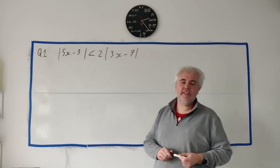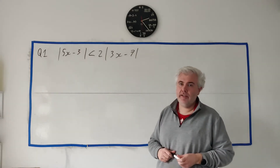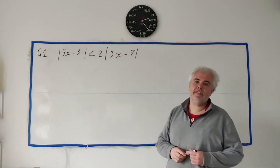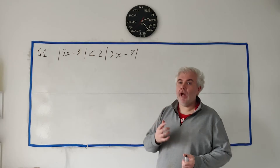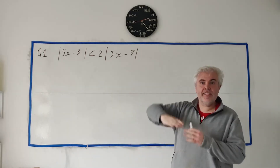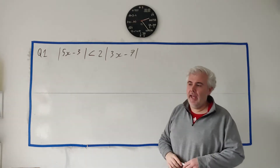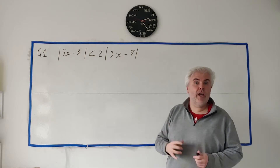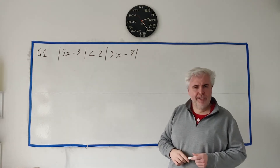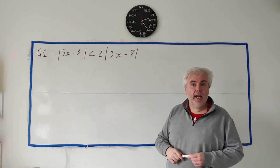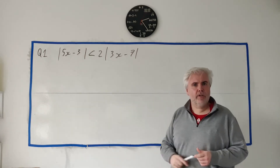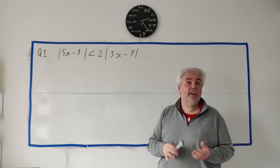In question one we need to solve the inequality with absolute values on both sides, and there are two main ways to solve this. One would be graphically — drawing out the two equations on each side and seeing which is bigger. The other method would be algebraically, squaring both sides and solving that way. Most students are happier doing it algebraically and I will do that later in the video, but first let me do it the graphical way because I think you can learn a lot more from it.